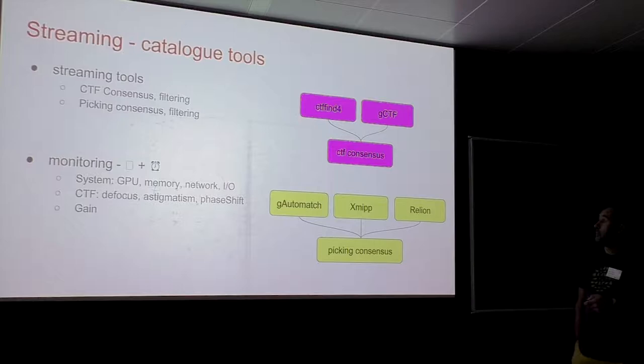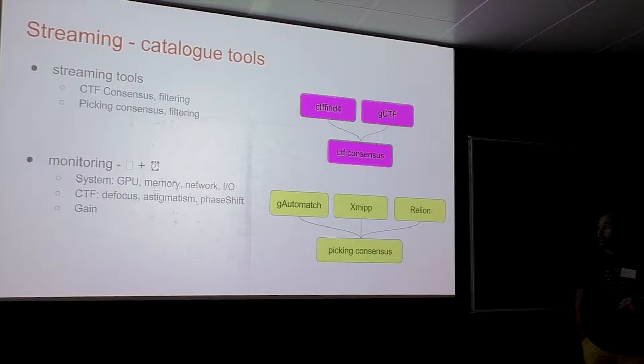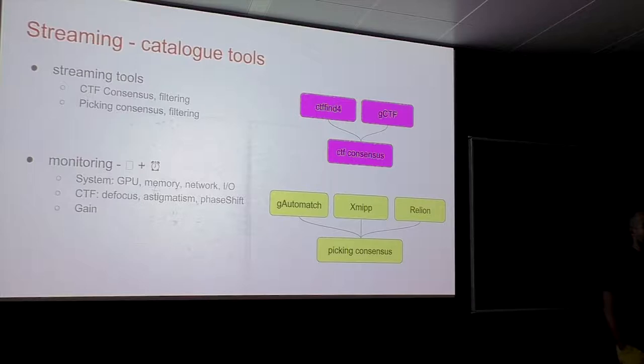For picking, you also have consensus tools. If you're not getting nice results with one picker, you can pick with two or three different pickers and then run a consensus. It will either take all of them — a more relaxed approach — or take only those particles that appear in two or three pickers, in a more restrictive way. It's a way of cleaning your particle set so you can later work with cleaner data.